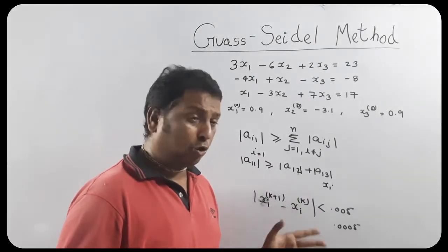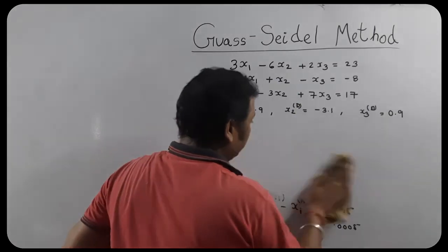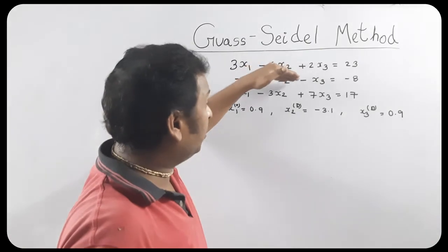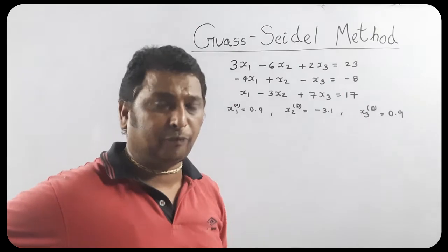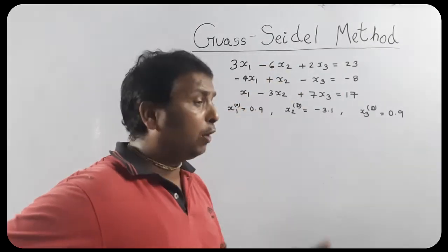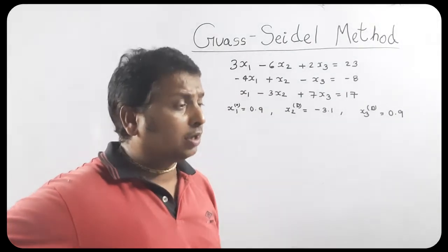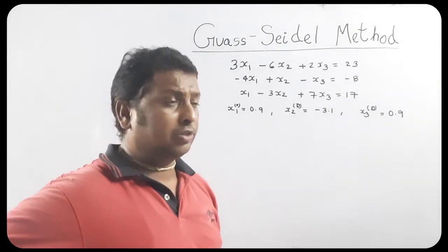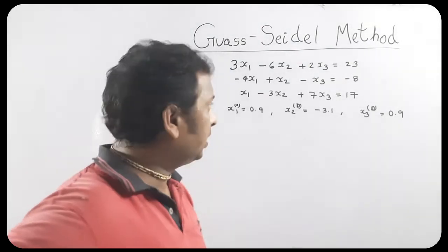Now you understand what is the diagonally dominant form, what is the actual meaning of convergence of any iteration method, and when we terminate any iteration method. These three concepts are very important for numerical analysis. Now we will do the problem. If we do not write the equation into diagonally dominant form, then what happens? When you calculate iterations, you will find out after two or three iterations something will diverge — it will not converge to any value.